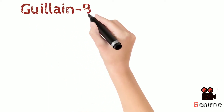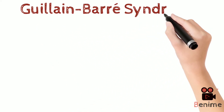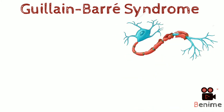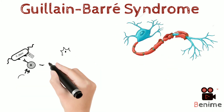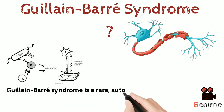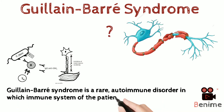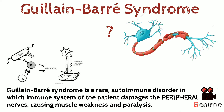Hello there everyone, this is 5-Minutes Medicine and today we will talk about Guillain-Barré Syndrome, a hypersensitivity reaction that damages our nerves and can be understood as a rare autoimmune disease in which the immune system of the patient attacks peripheral nerves, causing weakness and paralysis.